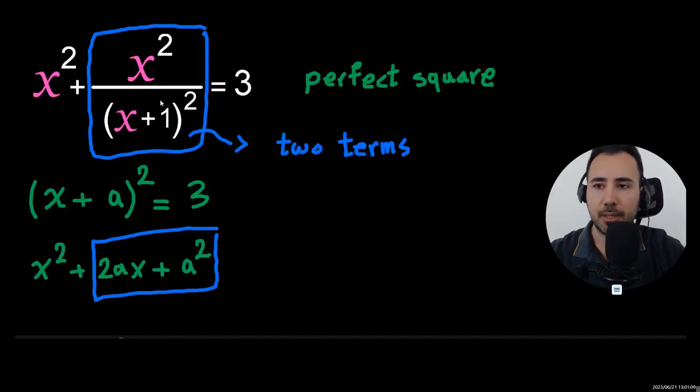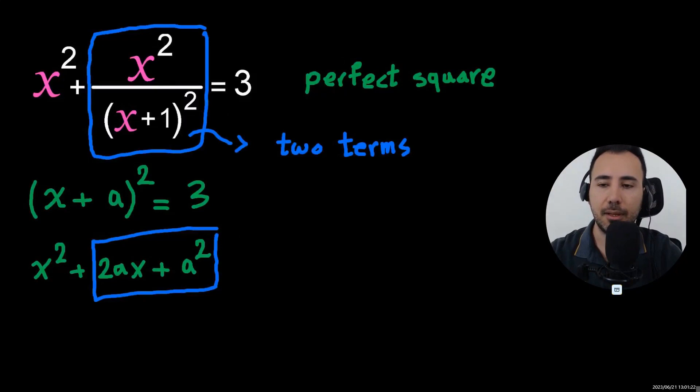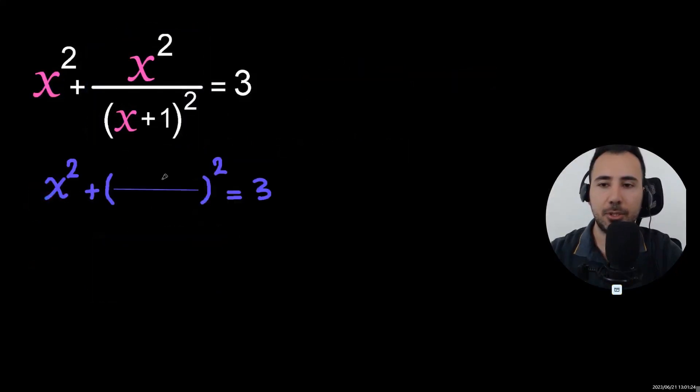So this one, if we could write it as two terms, and these two terms will be this, then we have a chance at writing it as a perfect square. Let's see how we could use this two terms, to write it as two terms.